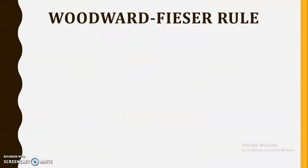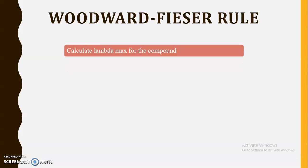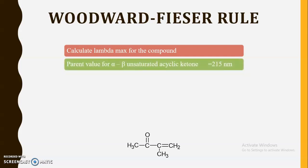Now let us study certain examples. Calculate the lambda max for the given compound. As you look at this particular structure, no ring is present, so clearly this compound is an acyclic ketone structure. For that purpose, we know the parent value for alpha, beta unsaturated acyclic ketone is 215 nanometers. Here you can identify the ketone functional group. The carbon atom next to the carbonyl carbon is known as alpha, and the next is beta — so alpha and beta positions both have unsaturation. This is why this structure is an alpha, beta unsaturated acyclic ketone, and we can apply the Woodward-Fieser rule.